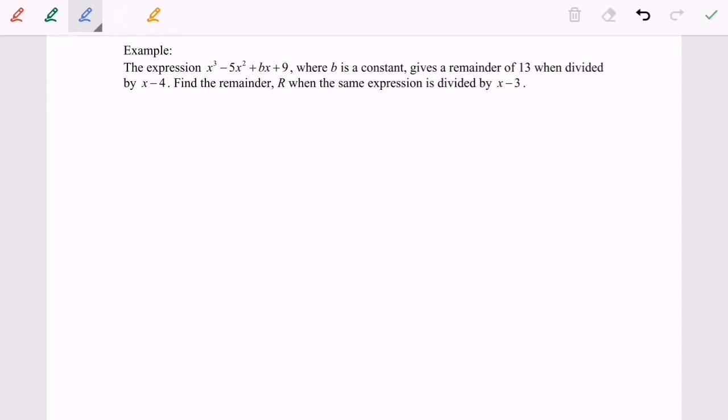Hello everyone, so now I'm going to discuss another example for the remainder theorem. The expression x cubed minus 5x squared plus bx plus 9, where b is a constant, gives a remainder of 13 when the expression is divided by x minus 4.